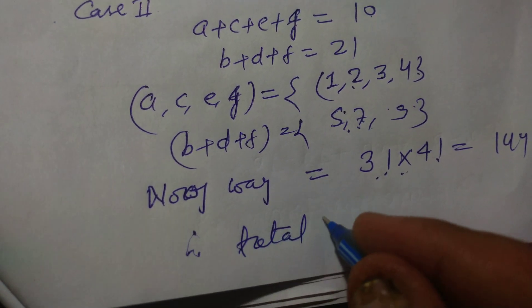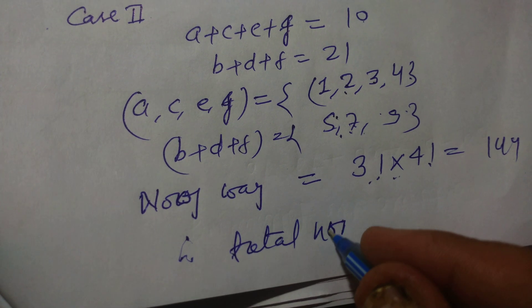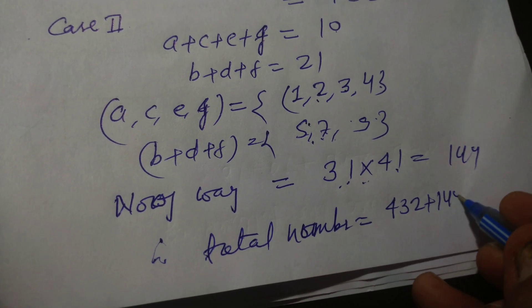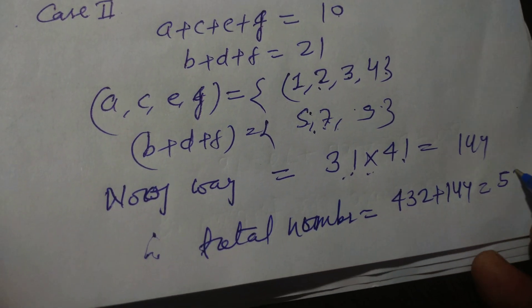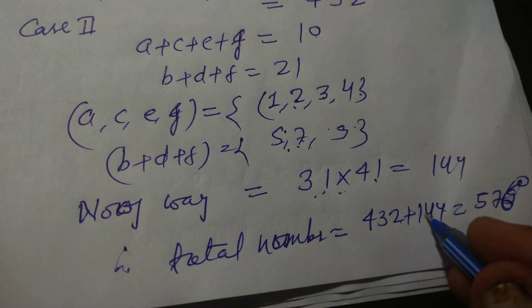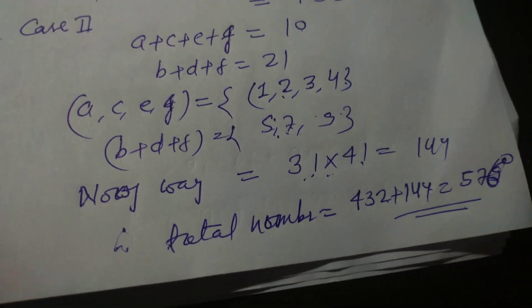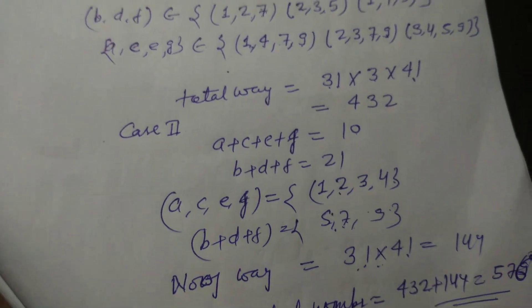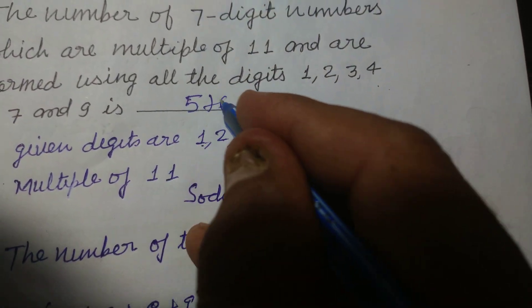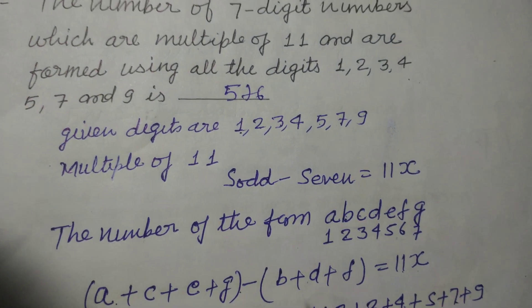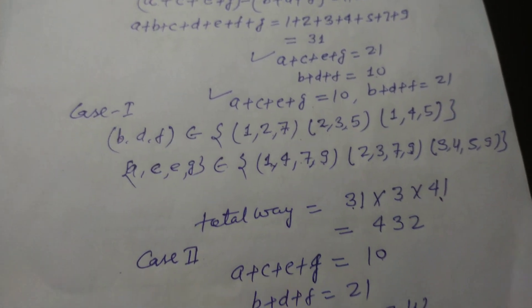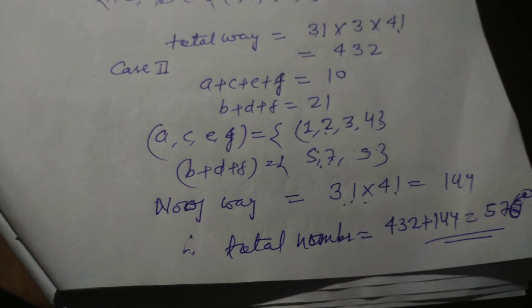Therefore, total numbers equal to 432 + 144 equal to 576. So 576 is the right answer of this question. Students, in this way we solve this problem. I hope you got it. Please like the video, subscribe the channel, and make comments. Thanks for watching.